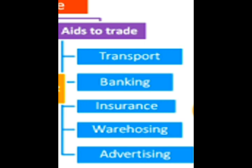Now let me tell you how aids to trade assist trade. Goods are produced by the producer who is at a distance from the consumer. He has to transport goods from his warehouse to the consumers. He will do this with the help of transportation. So transportation helps in moving goods from the place of production — that is from the warehouse of the producer — to the place of consumption, that is to the market.